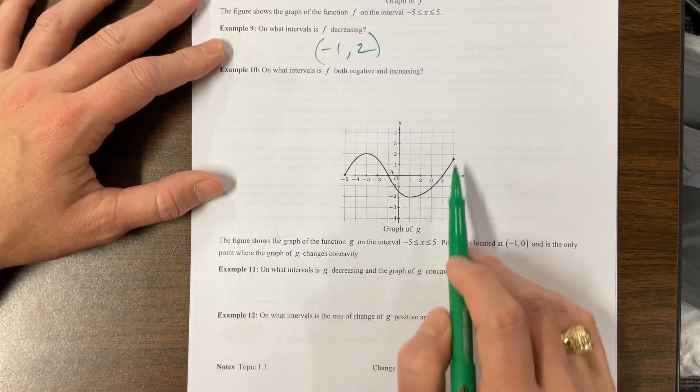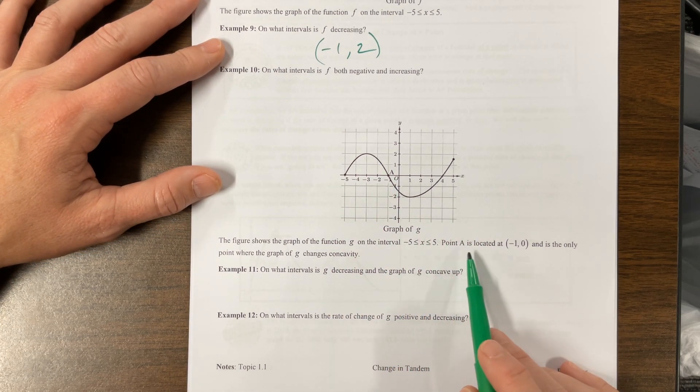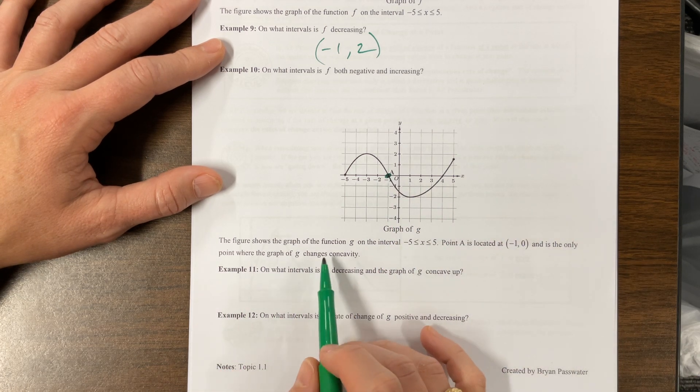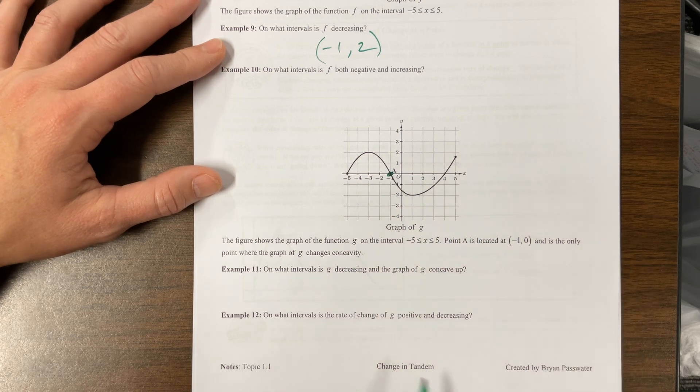So on this one, they've given us a graph from negative five to five. Point A is located at negative one. There it is. Negative one, zero. And the only point where it changes concavity. So we are concave down. We are concave up. Very nice.